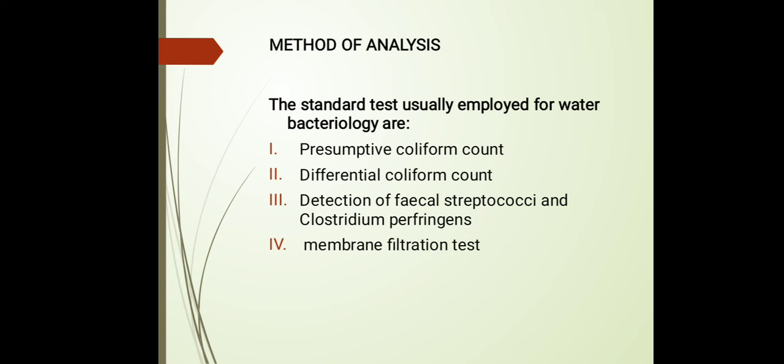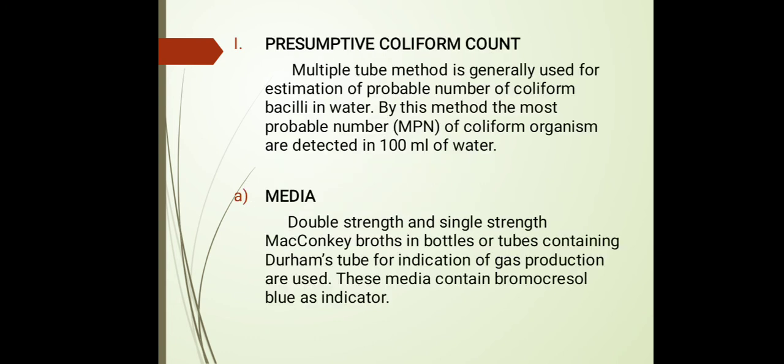There are four methods of analysis for water quality examination. The first is the presumptive coliform count, then the differential coliform count, then detection of fecal streptococci and Clostridium perfringens, and finally the membrane filtration method. Each method will be discussed briefly here, with detailed explanations provided in upcoming videos. First, we look at the presumptive coliform count.